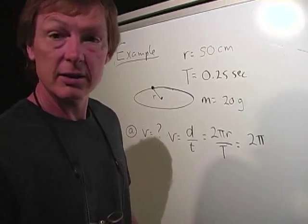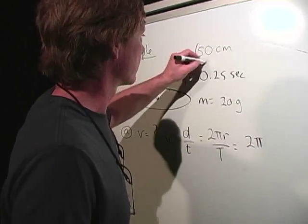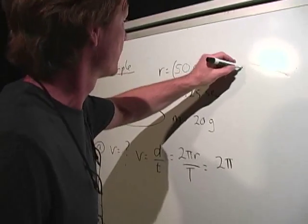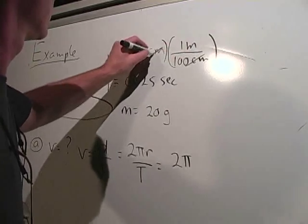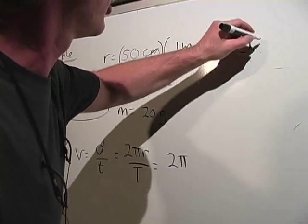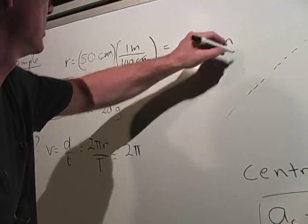That gives me 2 pi times the radius. Let's convert the radius from centimeters to meters. So I've got 1 meter per 100 centimeters. That's going to give me 0.50 meters.